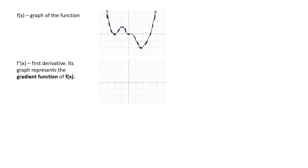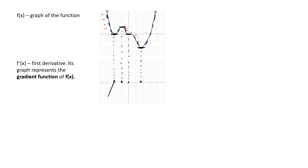First let's identify some critical points, starting off with where we have horizontal tangents. Where we have horizontal tangents, the gradient of the tangent is equal to zero — in other words f dash x is equal to zero. So I'm going to be able to mark it here on the x axis of my f dash x curve. When we have sections of the curve that are decreasing, in other words the gradient is negative like here, f dash x is going to be negative as well, and so it's going to be below the x axis.